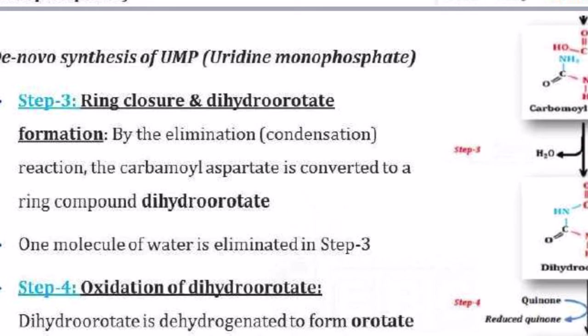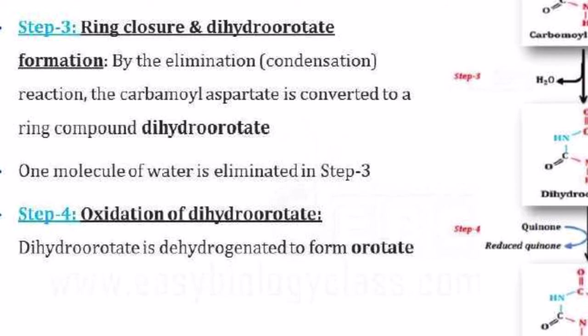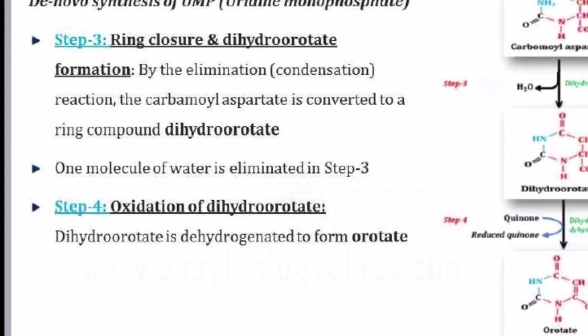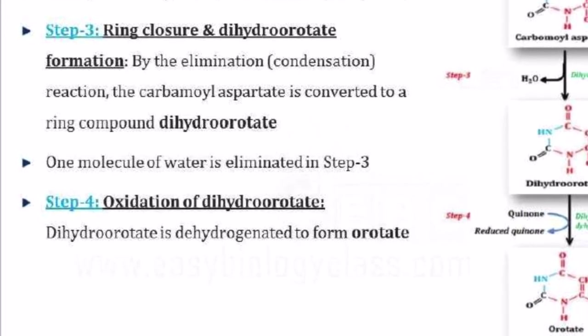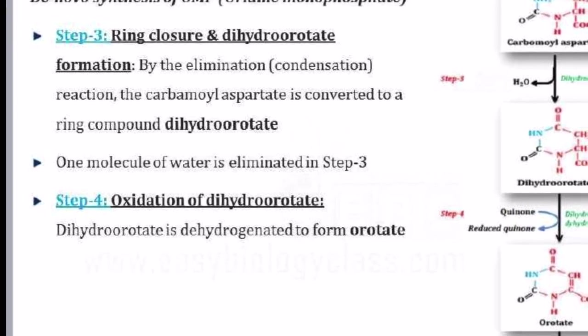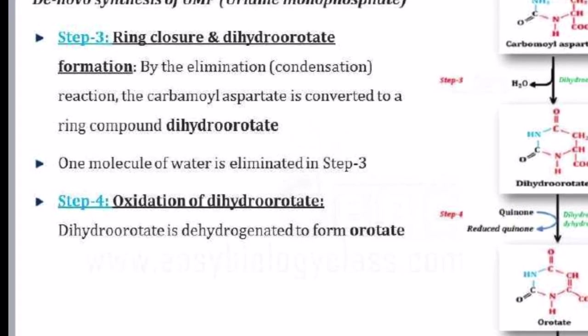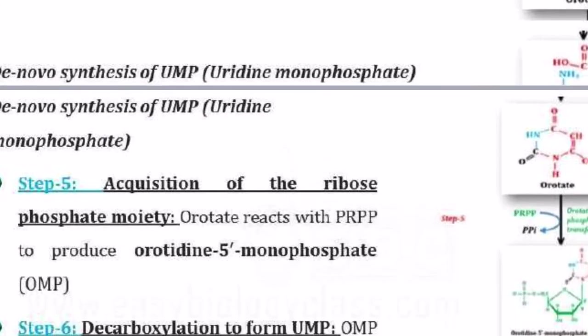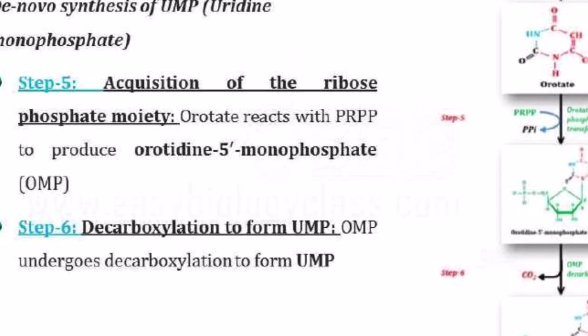The ring closure forms dihydroorotate with the help of the enzyme dihydrogenase. Step four is the oxidation of this dihydroorotate. Dihydroorotate dehydrogenase enzyme is involved, and it helps convert dihydroorotate through oxidation.